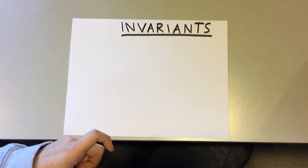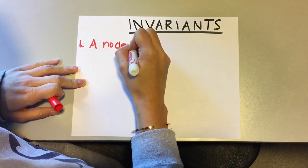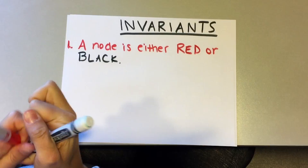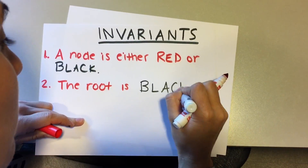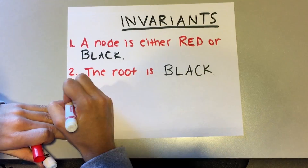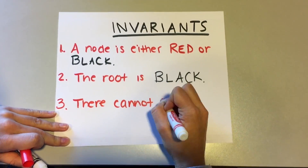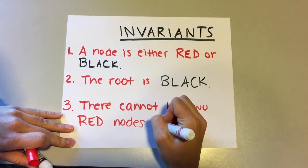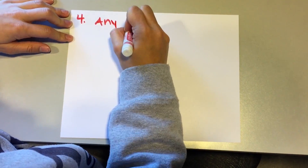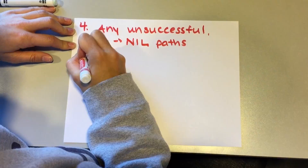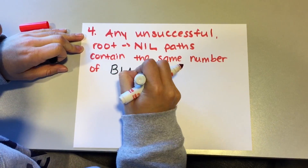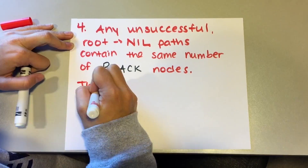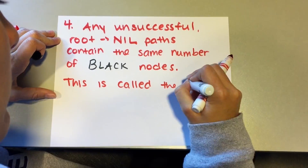Invariants. One: a node is either red or black. Two: the root is black. Three: there cannot be two red nodes in a row. And four: any unsuccessful root-to-nil paths contain the same number of black nodes. This is called the black height of the red-black tree.